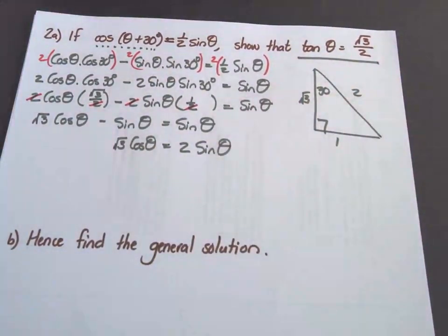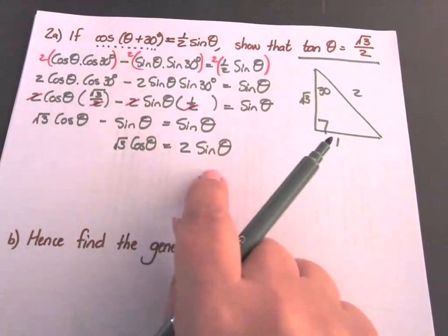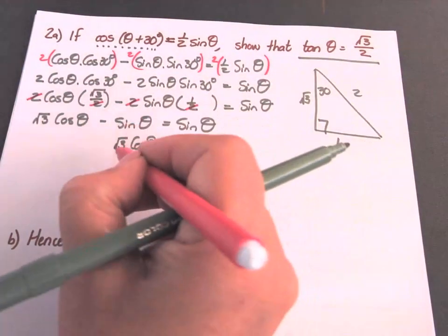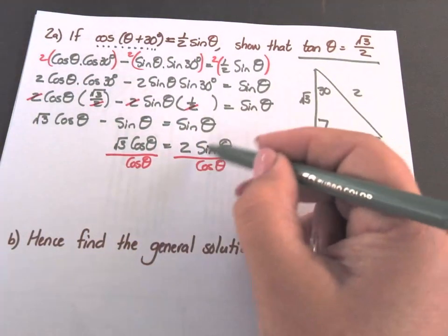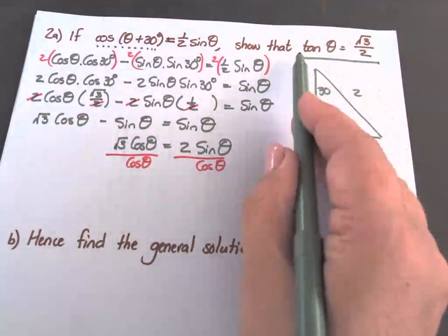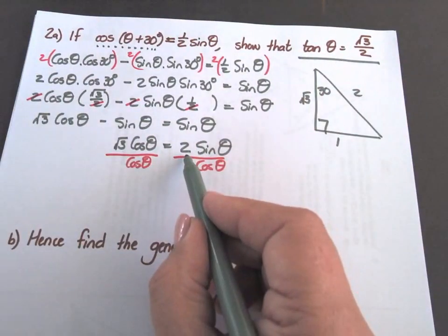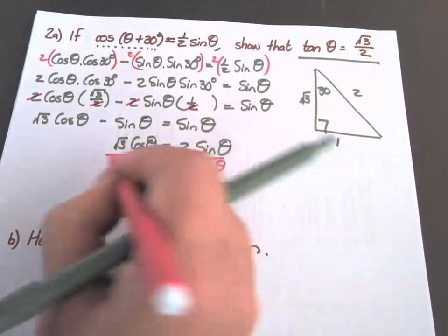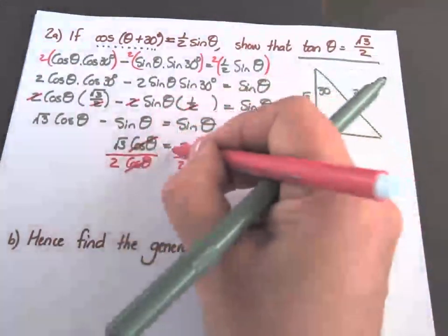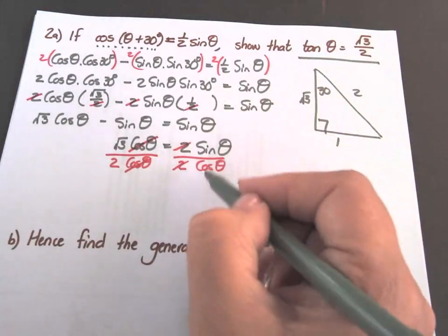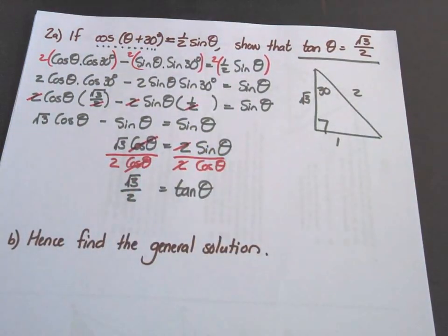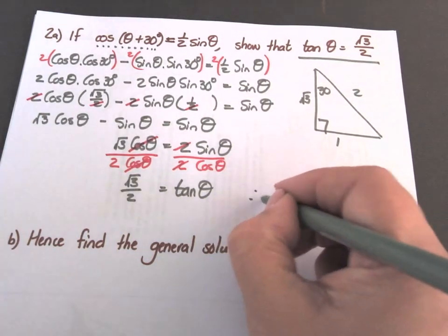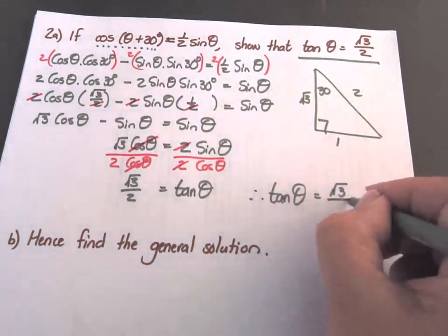Now I'm working towards a tan. How will I get a tan if I have a cos and a sin? Sine over cos. So I need to divide by cos on both sides. Therefore I'm going to divide by cos here. I also have to get rid of this 2, so I'm going to divide by 2 on both sides. Then the cos cancels out and the 2 cancels out, and I get sin over cos equals tan, which equals root 3 over 2. Therefore tan theta equals root 3 over 2.